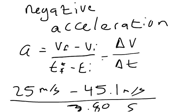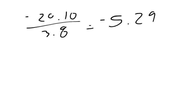That leaves us with 25 minus 45.1 equals negative 20.10, and divide that by 3.8. So negative 20.10 divided by 3.8 equals negative 5.29, that's our acceleration, 5.29. And the units on that is meters per second squared.